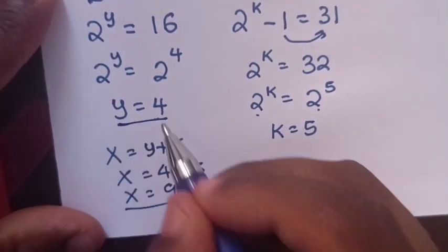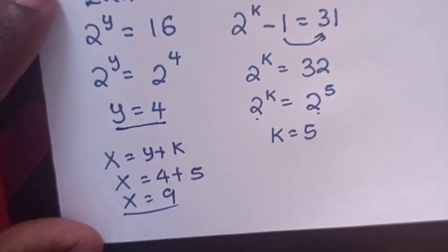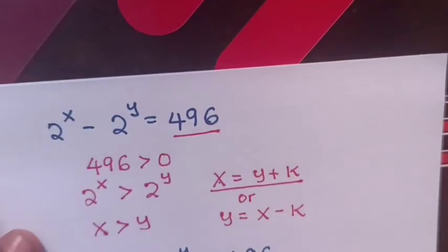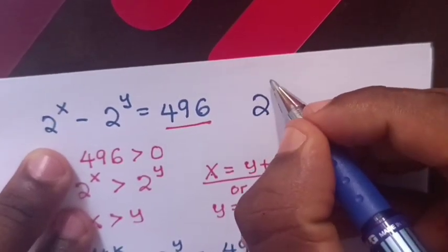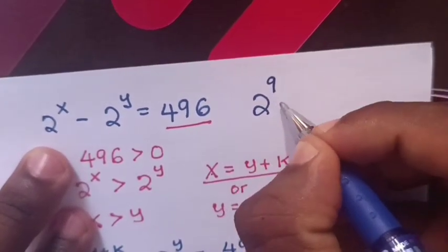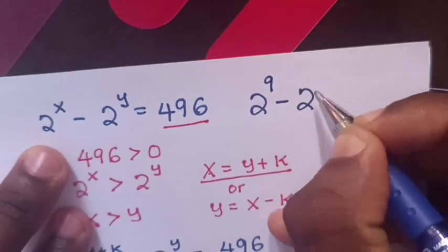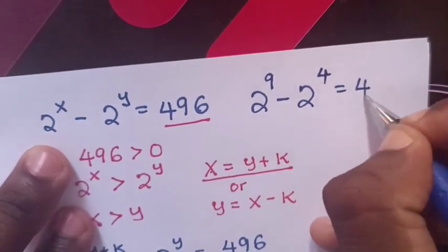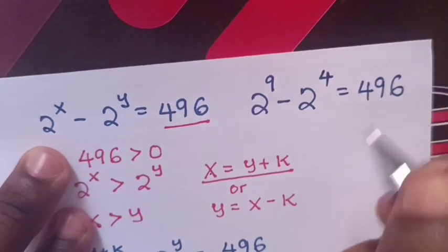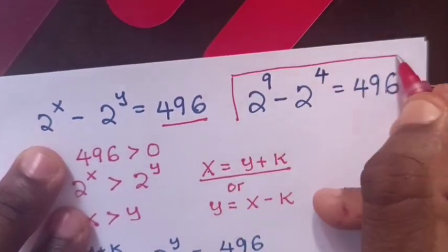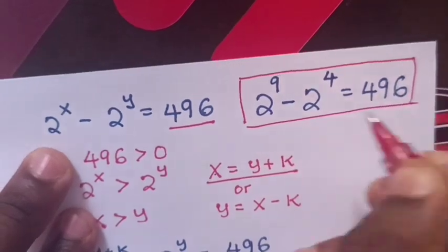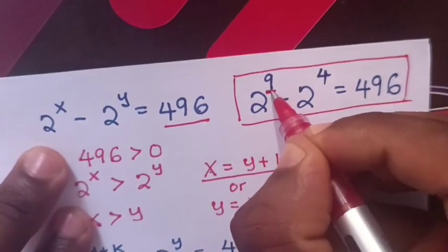So x is 9 and y equals 4. This is our answer. When we substitute here, it will be 2 power 9 minus 2 power 4 equals 496. Don't forget to subscribe to my channel. See you in the next video, bye bye.